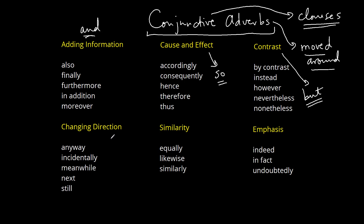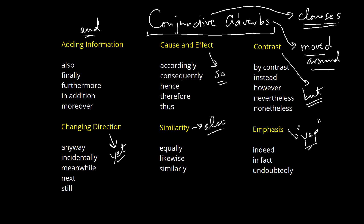Then we have 'changing direction,' which is a bit like saying 'yet' — we've seen a bunch of stuff, yet we're going to go in a different direction. Then we have 'similarity,' which we can express as 'also.' And 'emphasis' — we can say we've seen this, we agree with that, and we want to emphasize it. So those are some common examples of conjunctive adverbs, and as we go on we'll look at a couple of examples of how to use them.